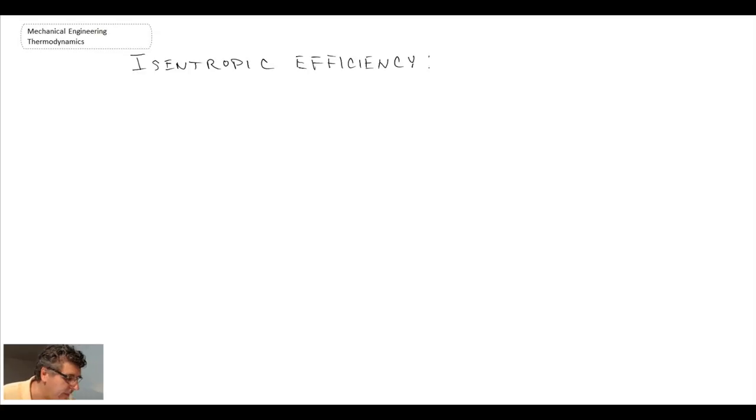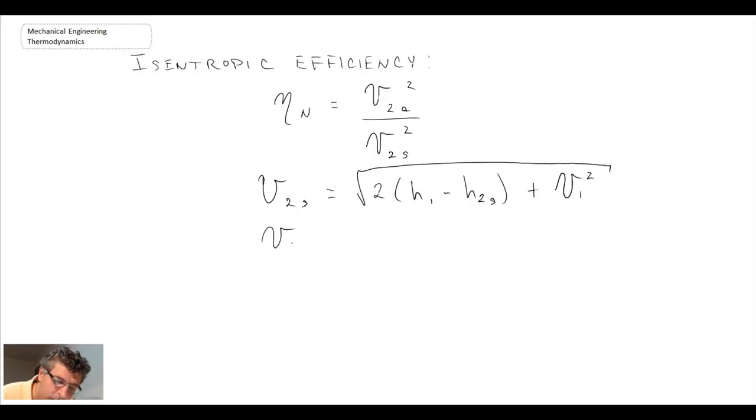We also call this adiabatic efficiency. And we saw the expression for the isentropic efficiency of a nozzle. It was like that. And what we can do now is determine a velocity using the equation that we just derived for the first law, but we will use it for a process that is isentropic. And so we'll use the enthalpy for the isentropic state, H2S. Again, being careful of the units here. And we get that an isentropic velocity would be 471.7 meters per second. And consequently, we can evaluate the adiabatic efficiency as 0.868.